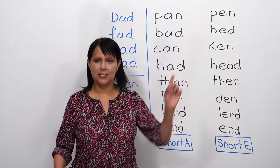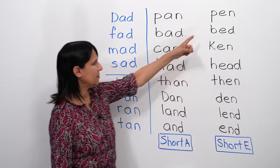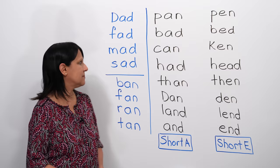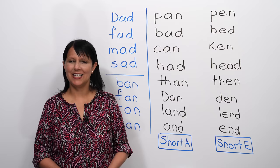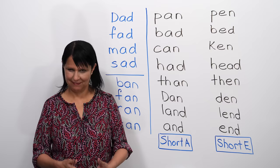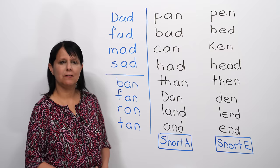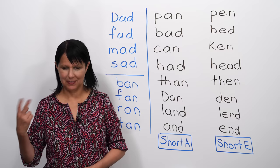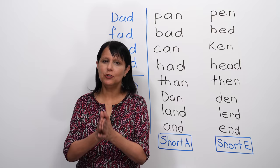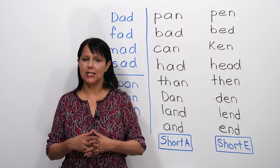Pen. So which one was that? The second one. Bad. The first. Ken. The first. Head. The second. Then. The second. Dan. The first. Land. The first. End. The second. Good. Now you're training your ear as well because your ear is also very much involved in pronunciation.